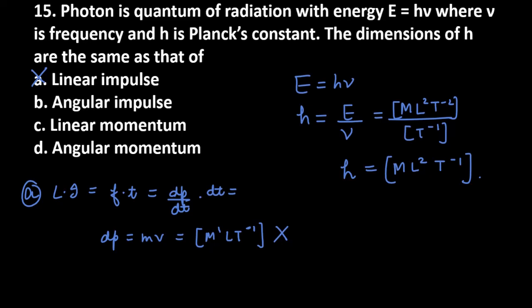Now for option b, angular impulse. Working through the dimensions, you'll get ML² T raised to power minus 1. Now you can see this is completely matching with h, so b is possible.